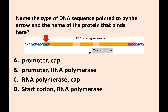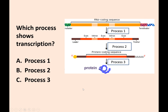The type of DNA sequence at the start is called a promoter, but the protein that binds the promoter is called RNA polymerase — so this is transcription initiation. Which process shows transcription? The answer is process one. Process two is RNA processing, because now you're removing the introns and putting on the cap and tail. And the last one is translation.